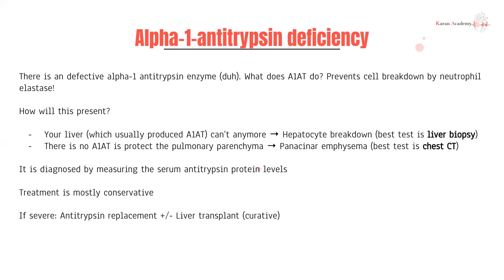An area where you really need alpha-1 antitrypsin is your lungs. Within your pulmonary parenchyma, you need high levels of this enzyme to prevent breakdown. When you don't have it, you get global breakdown of the parenchyma, and therefore you present with panacinar emphysema — 'pan' meaning all around, 'acinar' meaning acini, which are the end of your respiratory tract.